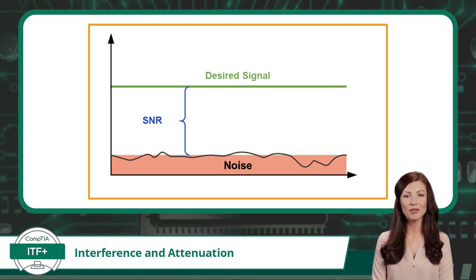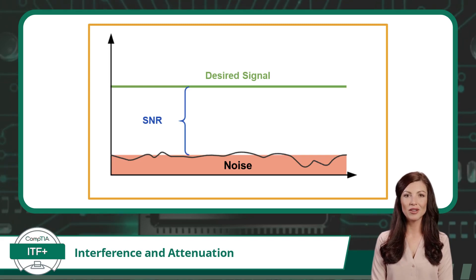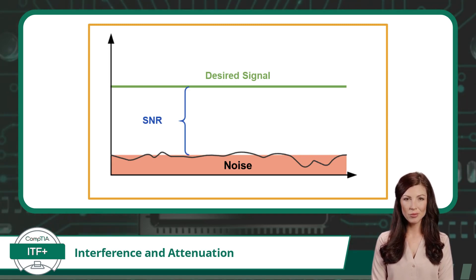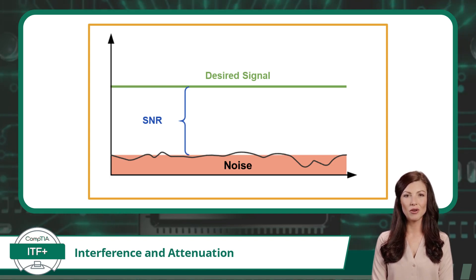The clarity of your conversation depends on how loudly you speak compared to the noise level. If your voice is much louder than the noise, the other person can hear you clearly — this is a high signal-to-noise ratio. Speak too softly and your voice will not be distinguishable from the crowd — this is a low signal-to-noise ratio.